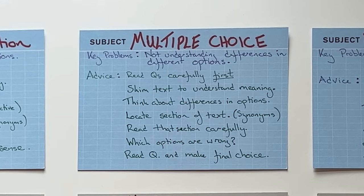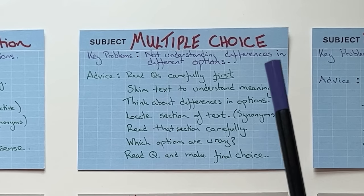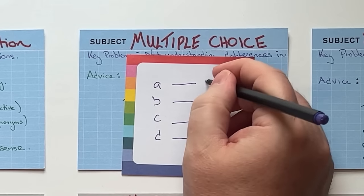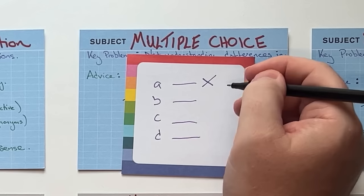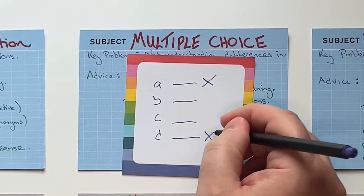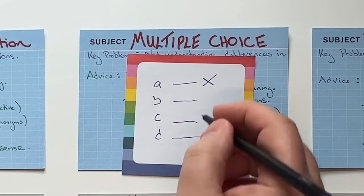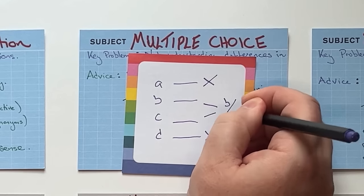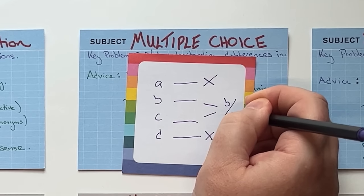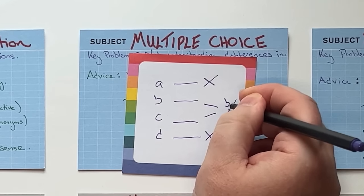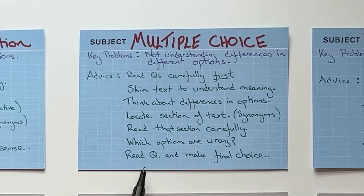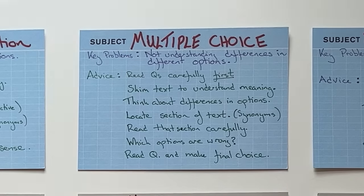If you are confused, think not about what is the correct answer but which options are definitely wrong. So if you eliminate A and D, that leaves you with B or C. Then focus in on B and C, think about the big difference between them, check the text again, and decide. Finally, read the question and make the final choice.